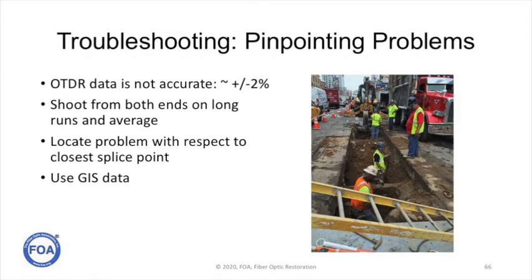If you think you have a break in the cable and you send a tech out to look for it, remember that OTDR data is not that accurate. There's a discrepancy between the fiber length and the cable length — the fiber is longer, and the cable doesn't follow a straight line. So you shoot from both ends on long runs and average. That'll help you if a problem is not obvious from the surface, like construction, but underground from something like directional boring or gopher. Remember to locate the problem with respect to the closest splice point — the closest reference you can get will reduce the error of your estimate. GIS data can be extremely helpful here, especially if your data also includes other physical location points in the area that you can use for references.